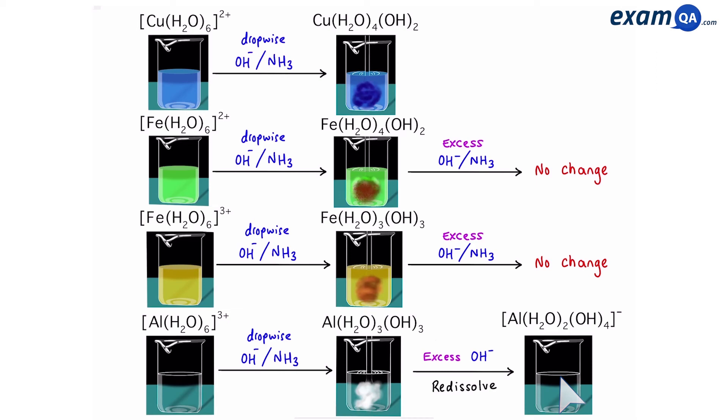Notice, however, this only happens if you add excess hydroxide. If you add excess ammonia, nothing happens, and it stays as a white precipitate. This is something unique to aluminium.